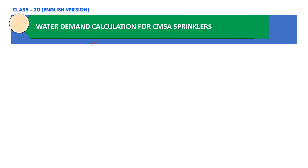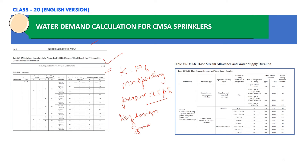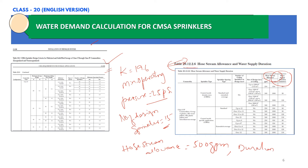In this slide, we are summarizing the data already determined. The K factor is 19.6 and the minimum operating pressure from one sprinkler is 25 PSI, both from table 22.2. The number of design sprinklers is 15. From table 20.12.2.6, the hose stream allowance for our scenario is 500 GPM and the duration is 90 minutes.